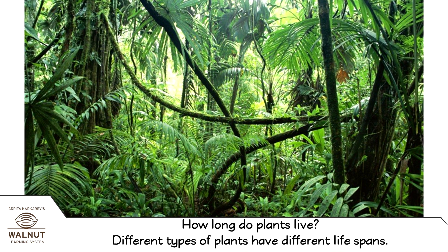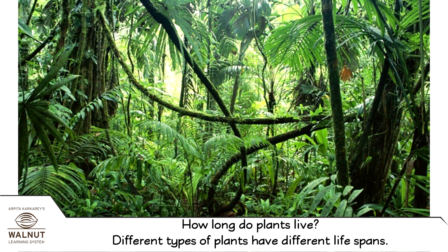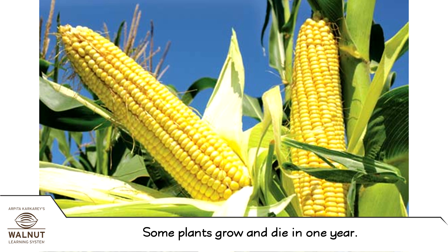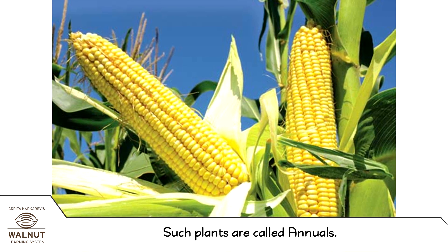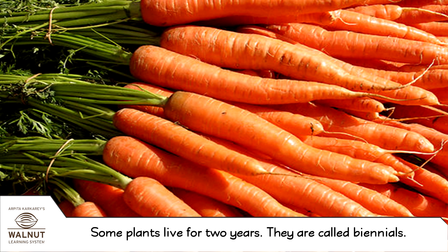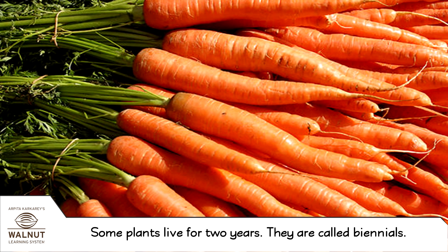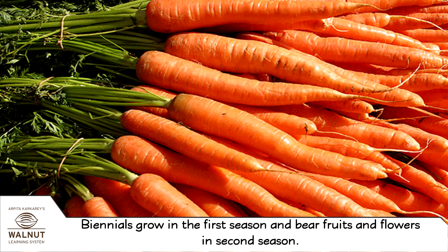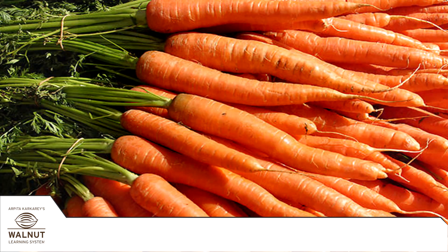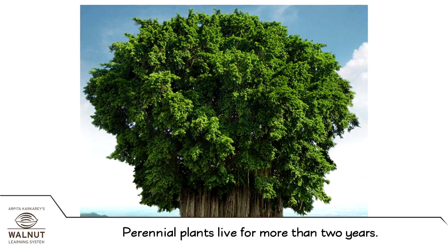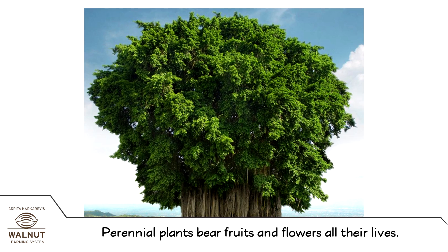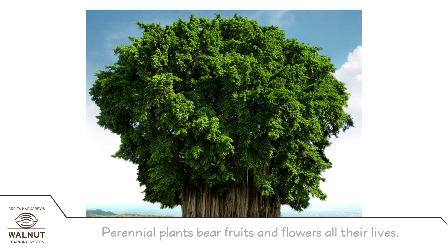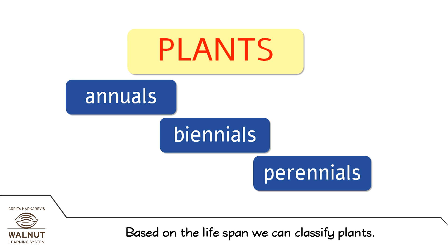How long do plants live? Different types of plants have different lifespans. Some plants grow and die in one year — such plants are called annuals. Some plants live for two years; they are called biennials. Biennials grow in the first season and bear fruits and flowers in the second season. Perennial plants live for more than two years and bear fruits and flowers all their lives. Based on lifespan, we can classify plants.